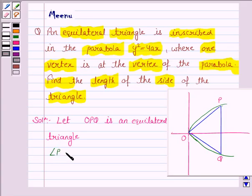So, angle P is equal to angle Q is equal to angle O is equal to 60 degrees. Now, we see that the line joining PQ is perpendicular to the x-axis.